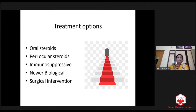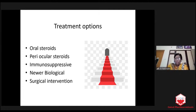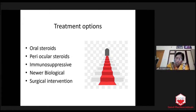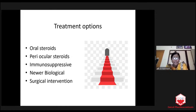The treatment option is a step-ladder pattern. We start with oral steroid. If cystoid macular edema is there, we have to go for periocular steroid. And always think about glaucoma in children.